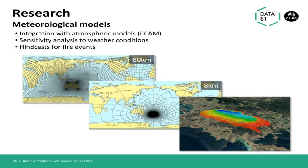Another area of interest is integration with atmospheric models. We want to look at two things: sensitivity to weather conditions — what are the greatest effects on a fire, is it wind gust, is it wind strength — and for some historical events we'd really like to get the hindcasts. We're using the in-house model called CCAM to do this, and doing it for a few historical events to actually go back and validate our results against the best possible weather scenarios we can pull out from CCAM.